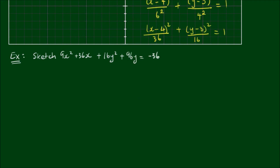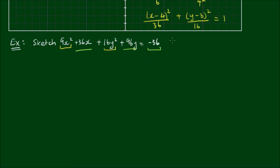Let's sketch the curve of the equation 9x squared plus 36x plus 16y squared plus 96y equals negative 36. The terms 9x squared and 16y squared imply this is an equation of an ellipse, and the linear x and y terms indicate it is offset from the origin. The negative right-hand side doesn't imply the equation is invalid — it will make more sense once we complete the square on the x and y terms.